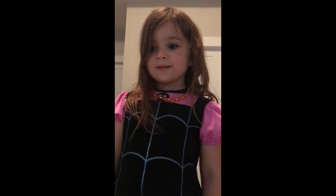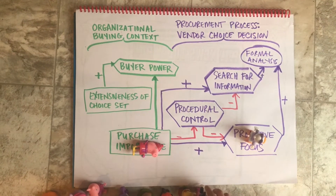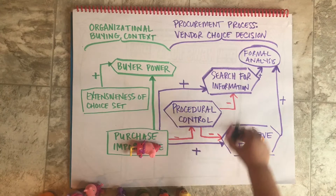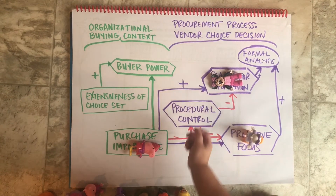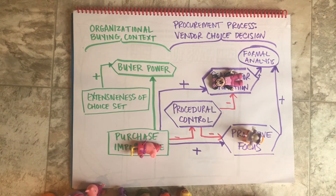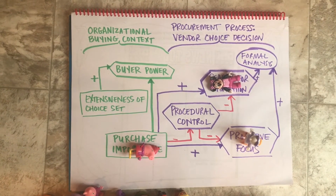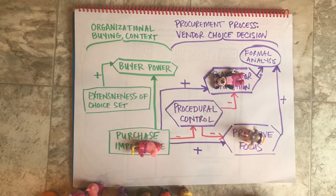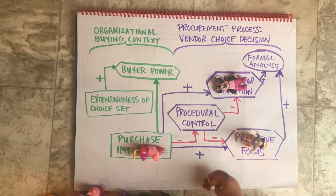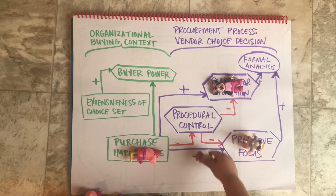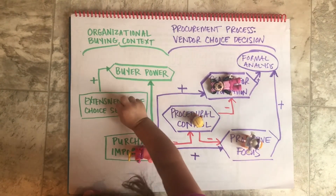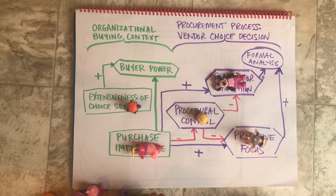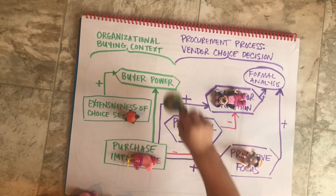Procedural control. While purchase importance directly influences procedural control, procedural control in turn has an impact on both the search for information and the extent of proactive focusing in the procurement process. The search for information is conceptualized as the purchaser's effort at scanning the internal and external business environment to identify or monitor issues relevant to the purchase decision. There is widespread support for the idea that purchase importance is positively related to the search for information, as it is a central aspect of decision risk, and collecting additional information significantly reduces that risk. Buying centers are larger and involve more communication for important purchases.